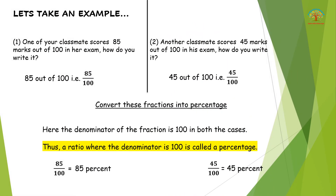Let's take an example to understand what percentage is and how to work with it. One of your classmates scored 85 marks out of 100 in her exam — we write that as 85 upon 100. Another classmate scored 45 marks out of 100 in his exam — we write it as 45 out of 100. Normally we say to parents, 'My friend scored 50 out of 100 and I scored 80 out of 100.'